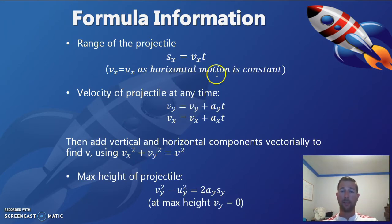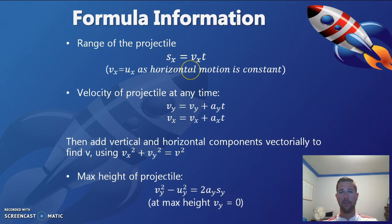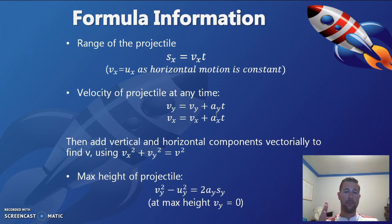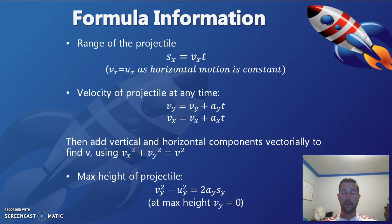We can work out the range of a projectile once we know its time of flight using a simplified equation with acceleration removed. There are also equations for the velocity of a projectile at any time in either the x or y plane. Since they are independent of each other, they form two sides of a triangle with the resultant being the actual velocity — we sum the x and y components in vector form to find the resultant velocity.